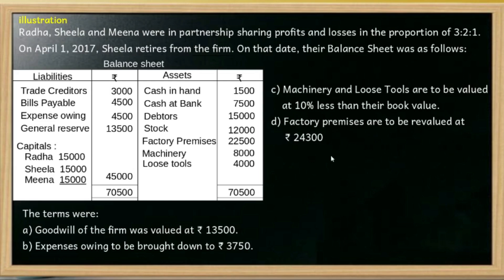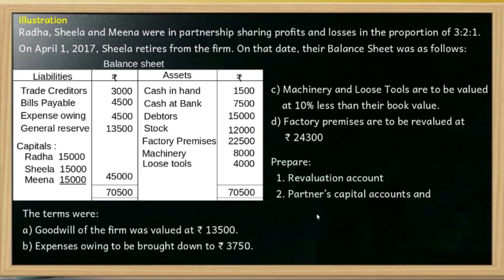Then, the factory premises are to be revalued at Rs.24,300. The factory premises show an increase in value — this is an increase in asset value. We now prepare the Revaluation Account and the balance sheet of the firm after retirement of Sheila.